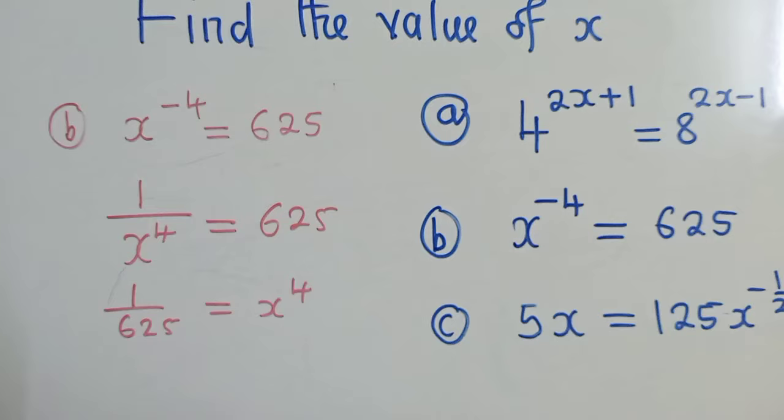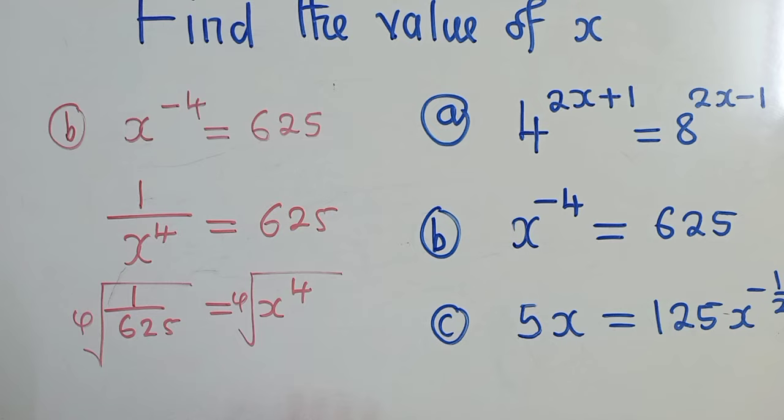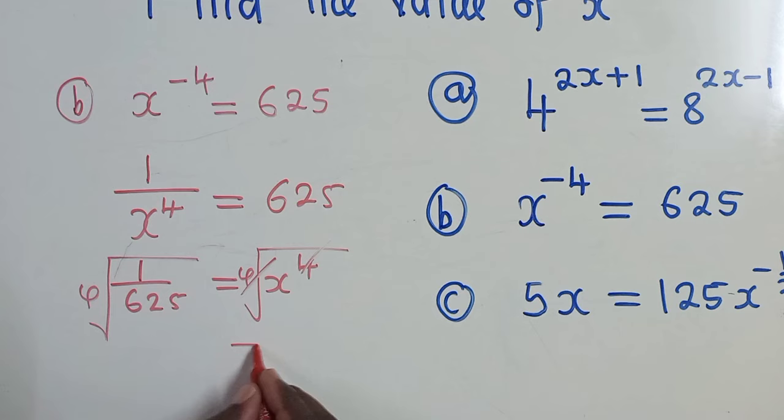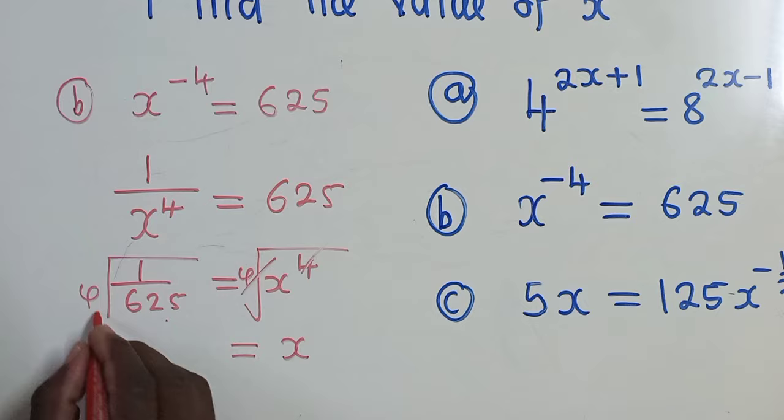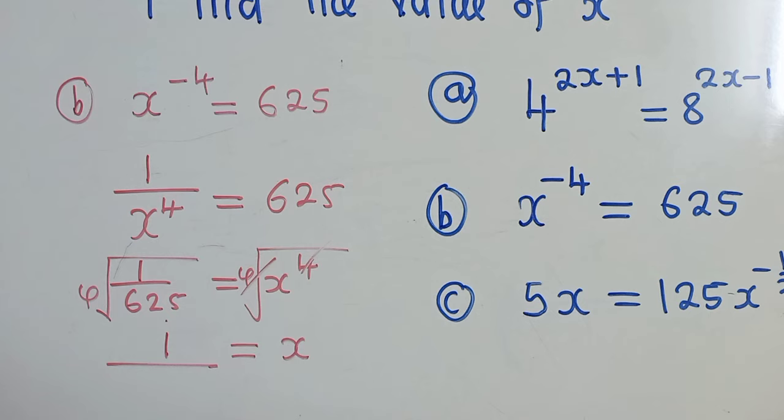So after that, we now find the fourth root both sides. The fourth root. We want to get rid of this power 4. So here it will cancel. We shall remain with x. This side, the fourth root of 1, it will just be 1. Over the fourth root of 625, it will just be 5.